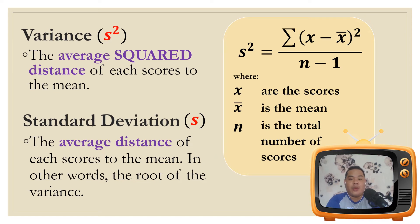Variance is the average squared distance of each score to the mean. It has the formula: s² equals the sum of (x minus x-bar) squared, all over n minus 1, where x are the scores, x-bar is the mean, and n is the total number of scores. Once the variance is obtained, all you have to do is get the square root of the variance — that root will be the value of the standard deviation.